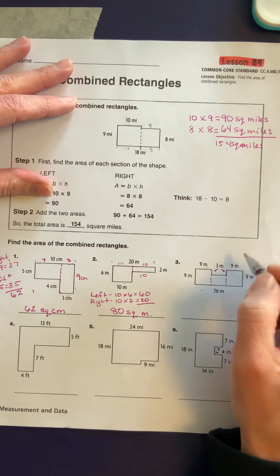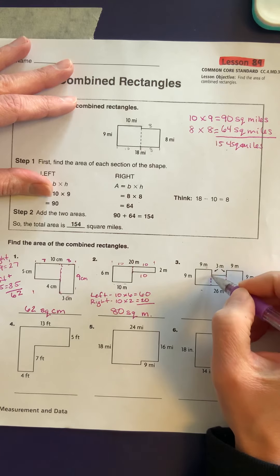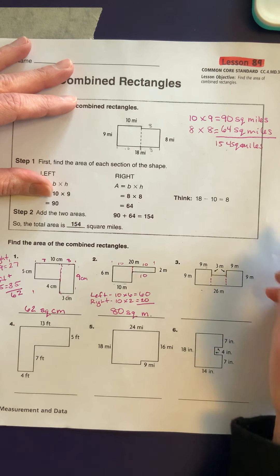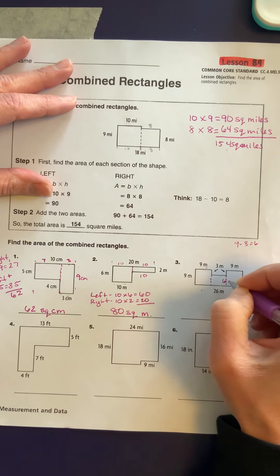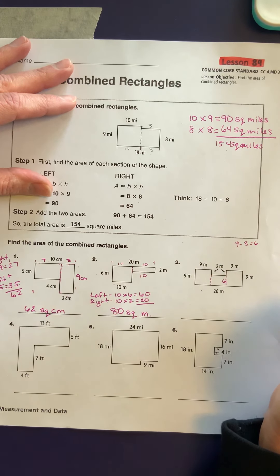So in order to find the height of these dotted lines, I have to take 9 minus 3, which is going to give me 6. So from here to here, it's going to be 6.